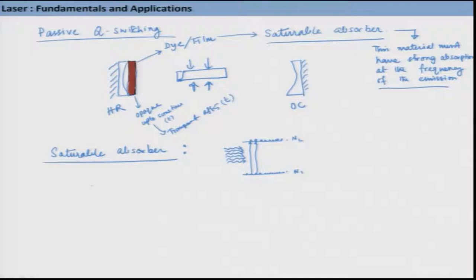There are several different types of saturable absorber. One commonly used type is certain cyanine dyes which are very routinely used to create passive Q-switching because they can act as saturable absorbers. I think this is pretty much about the Q-switching part - I tried to be as elaborate as possible so that you understand this concept very clearly.